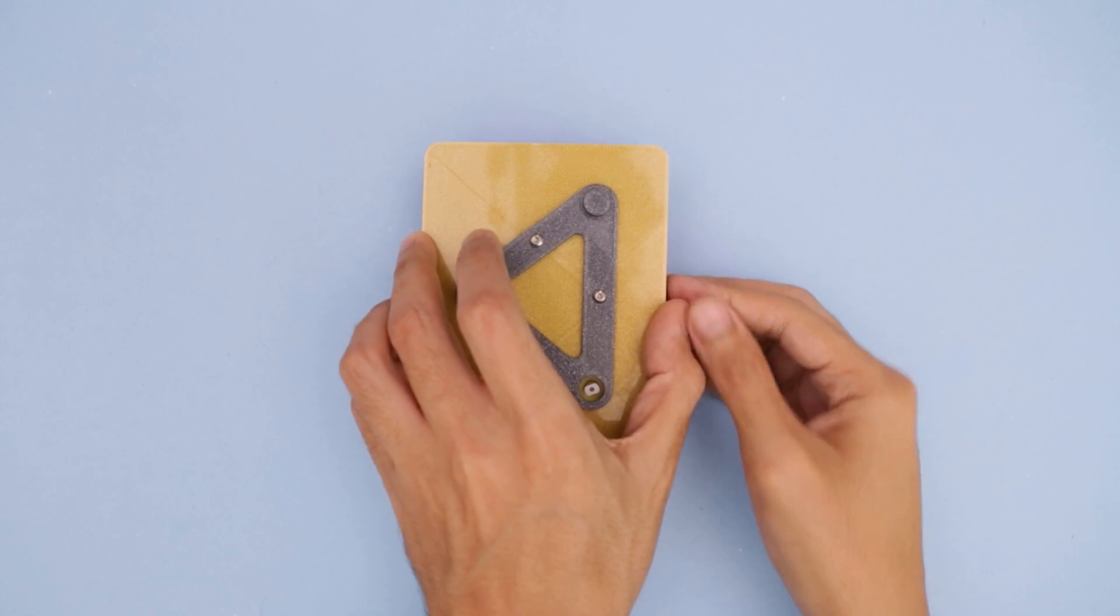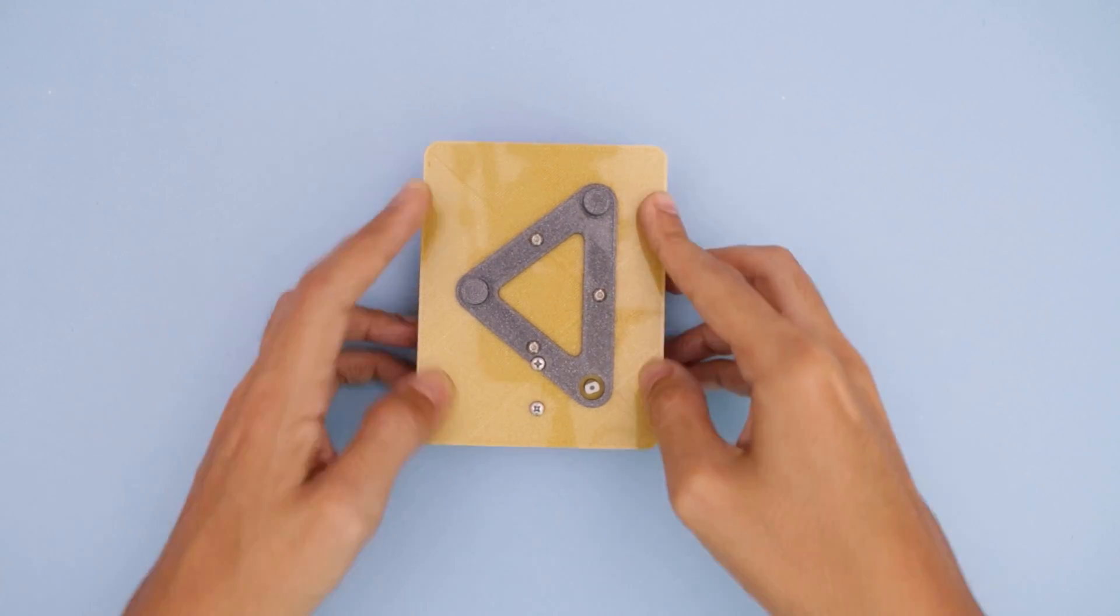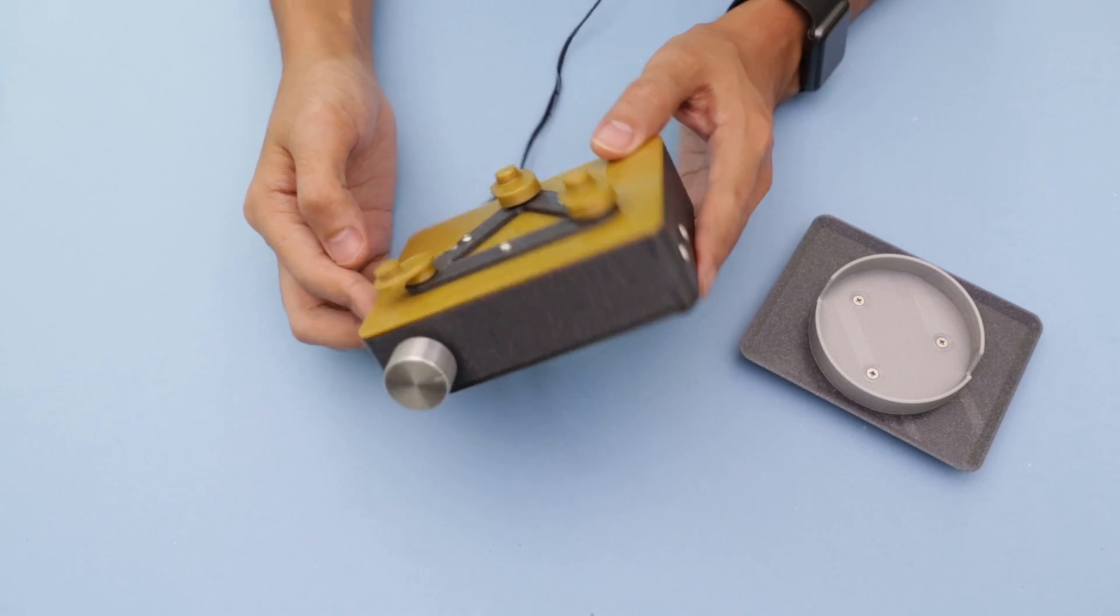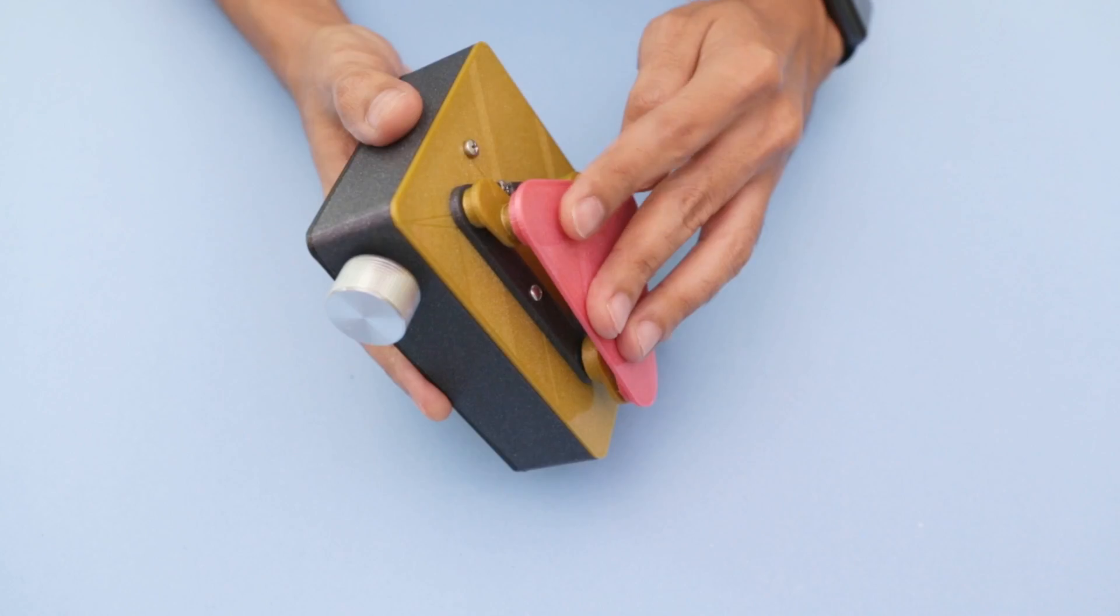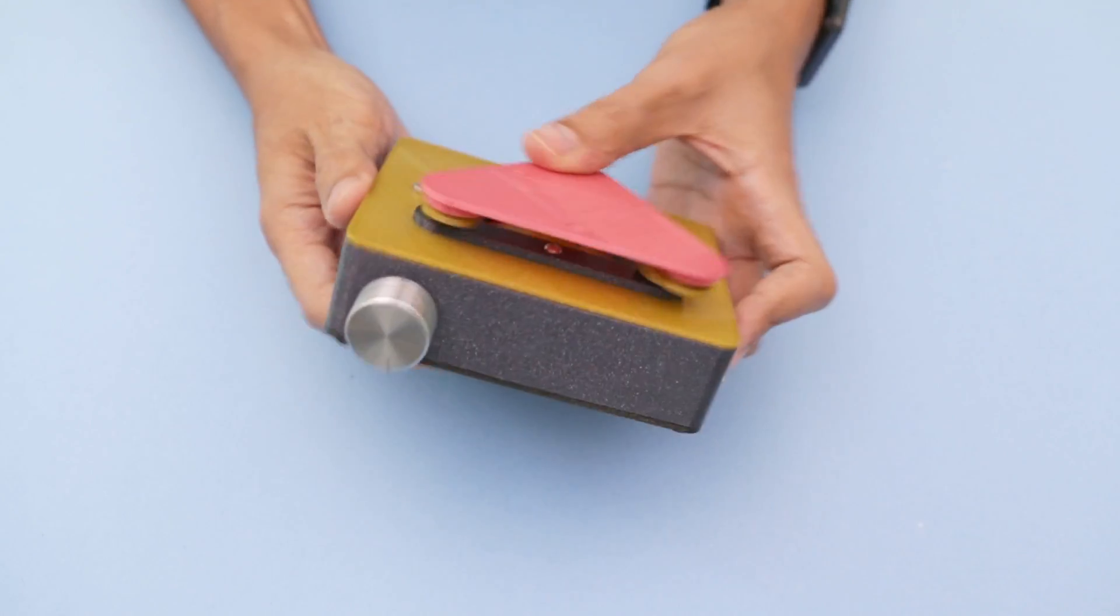Everything fits inside the 3D printed enclosure with the platform secured on top. A single DC geared motor drives a 3D printed motion link. We used the ball bearings to create smooth rotational movement and they're just press fitted into place.